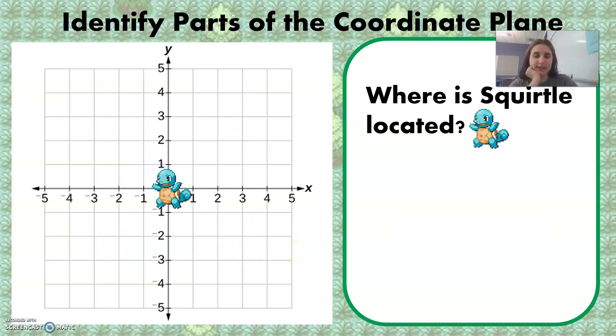All right, where is Squirtle located? Squirtle is located at the origin in the center where our x-axis and y-axis meet each other, the origin.